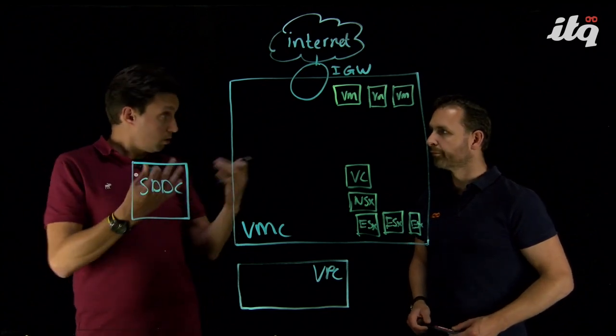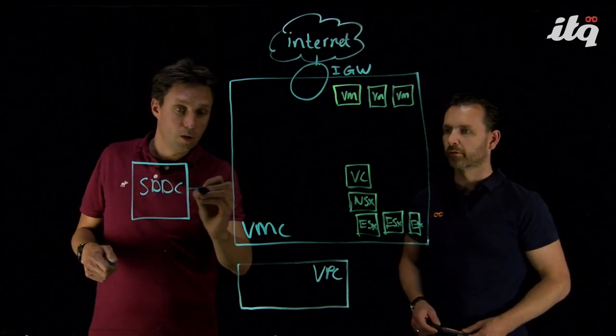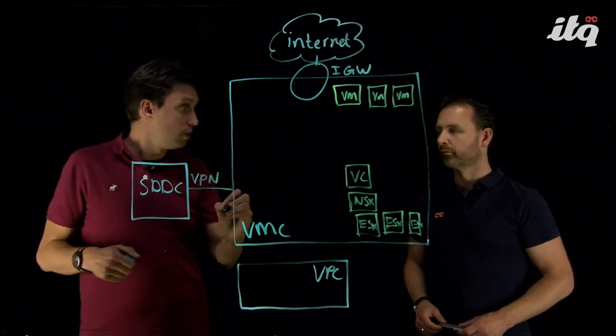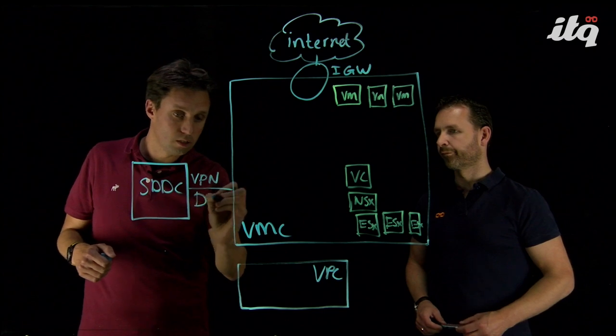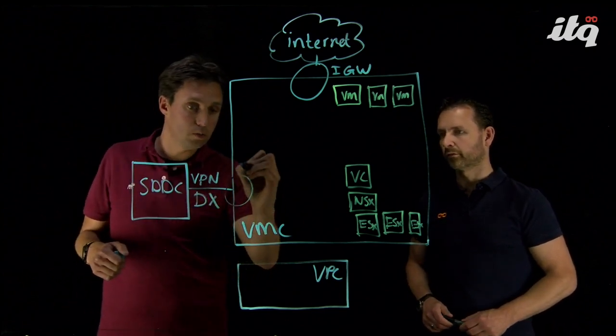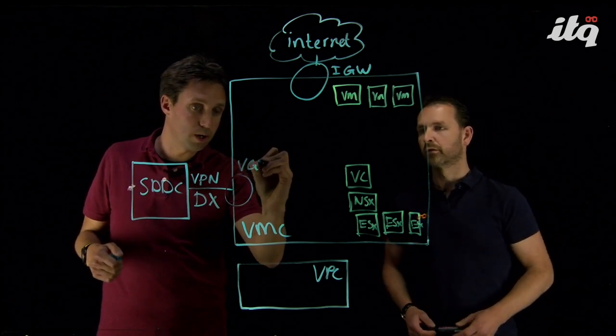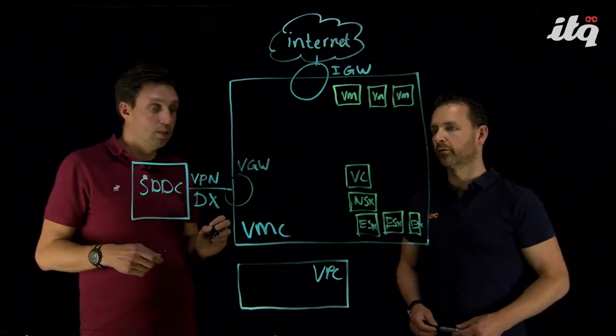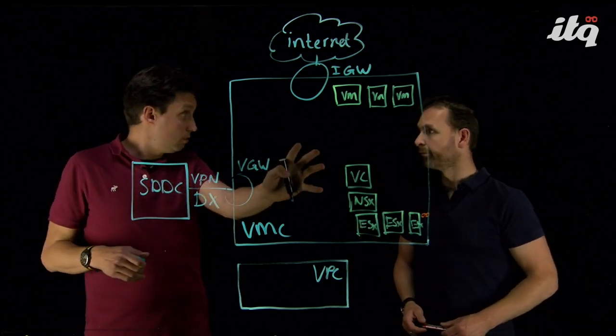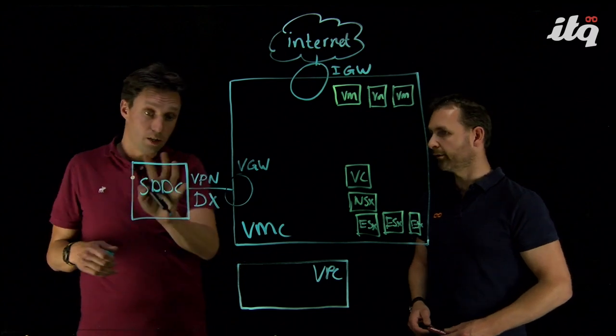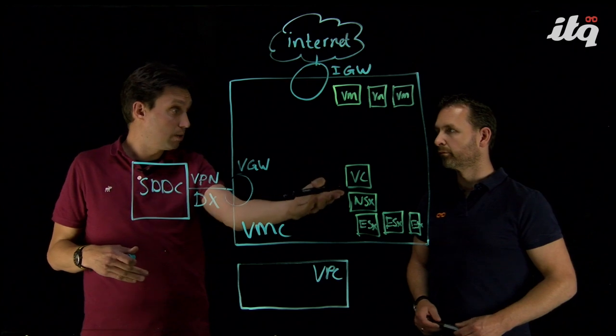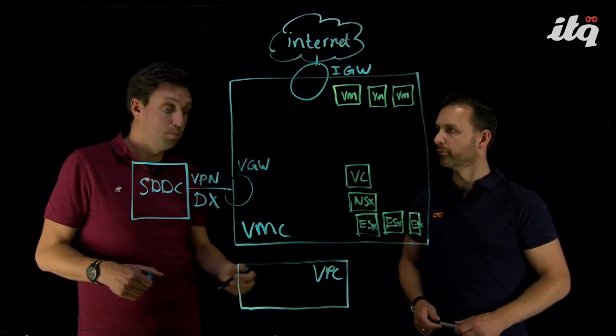So, for our SDDC connection or the connection to our SDDC, we can use VPN and or we can use AWS Direct Connect. That's over here. And for that, we need what they call or what Amazon calls a virtual private gateway. And this could be layer two, layer three? Yeah. If we talk about the connection between the VMC data center and on-premises, we can do that routed, layer three. Or we can even stretch networks from our data center to on-premises. That's both possible.